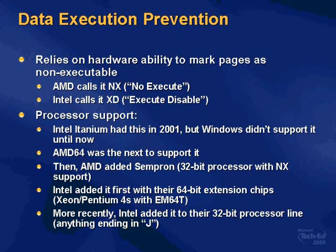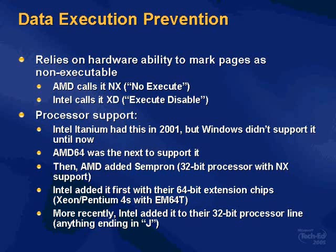Data Execution Prevention requires hardware support — the ability of hardware to mark a page as non-executable, which is relatively recent in the Windows world. Intel introduced data execution protection support in 2001 on their Itanium processor, but Windows support came just recently. AMD is often credited as the first to bring this to x86, calling it NX (No Execute). Intel followed and called theirs XD (Execute Disable). Initially this feature was only present in 64-bit CPUs, and more recently it has been introduced into 32-bit CPUs as well.